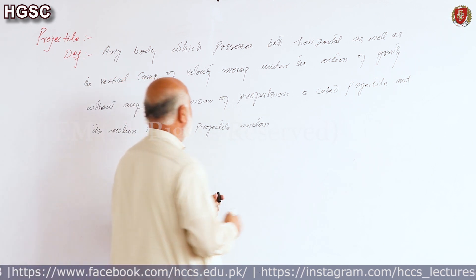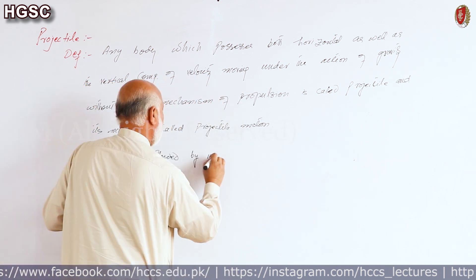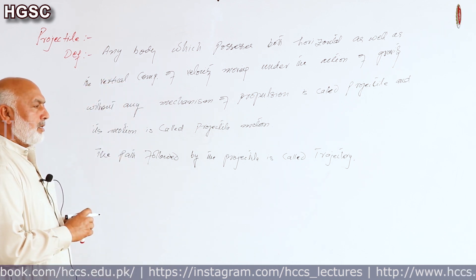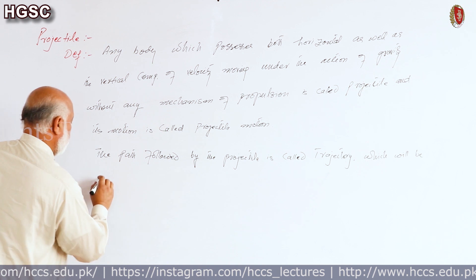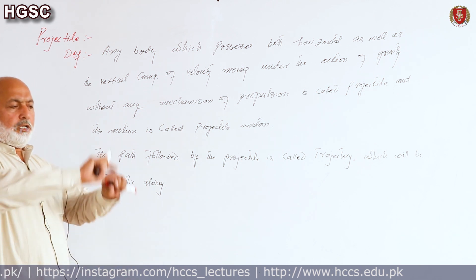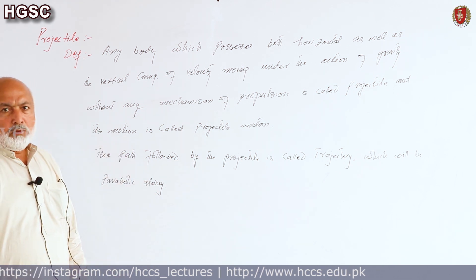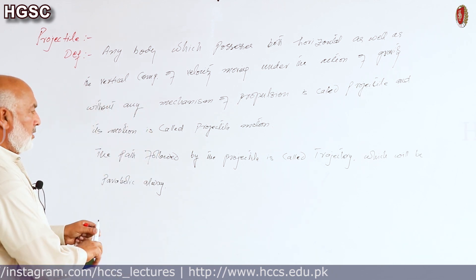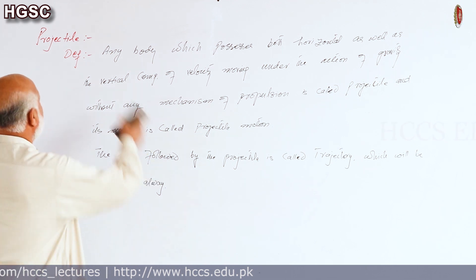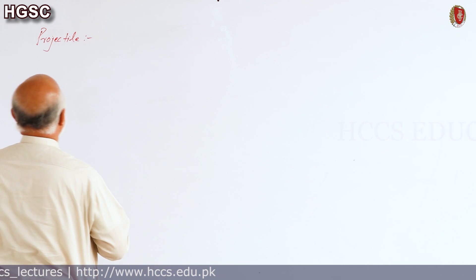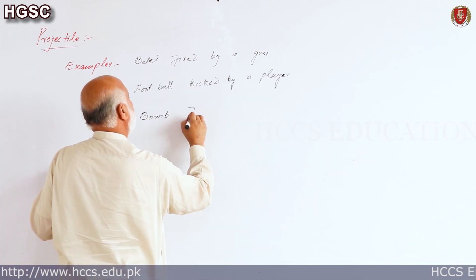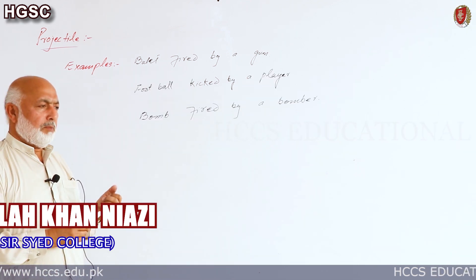The path followed by the projectile is called its trajectory, which is always parabolic — meaning it forms a parabola, a term from geometry. Examples include a bullet fired by a gun, a football kicked by a player, a bomb dropped by a bomber, and many other daily life examples.